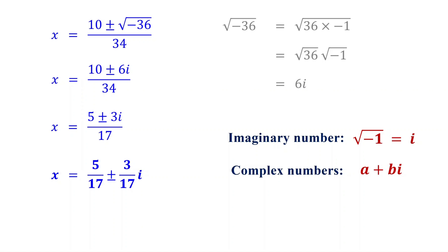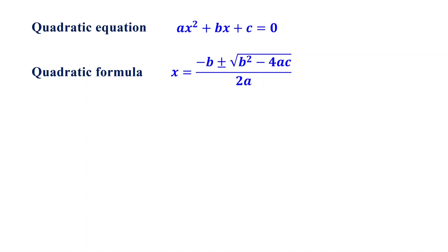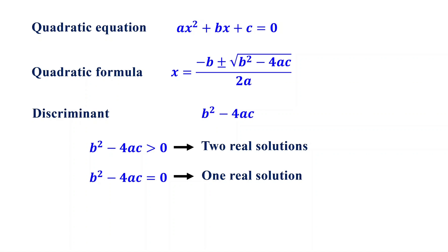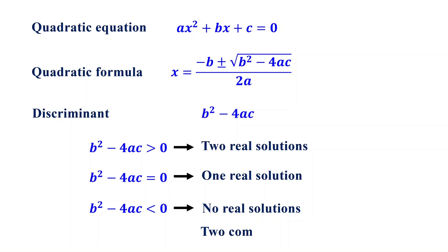You can either leave your solution as it is or write it to show the two solutions separately. When solving quadratic equations, for the first two examples we got two solutions, for the third one we got one solution, and for the last one we got no real solutions. This is determined by the discriminant, which is b squared minus 4ac — the expression inside the square root of the quadratic formula. When the discriminant is greater than zero, the equation has two real solutions. When it is zero, there is one real solution. When it is less than zero, there are no real solutions, but there are two complex solutions.